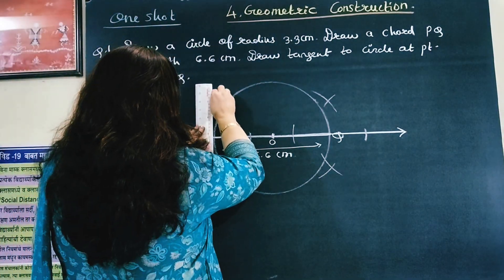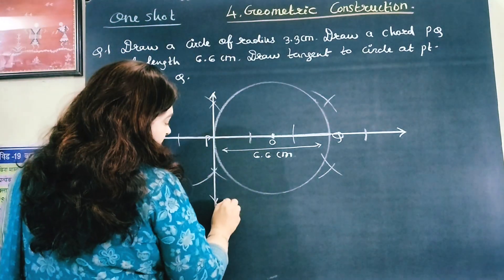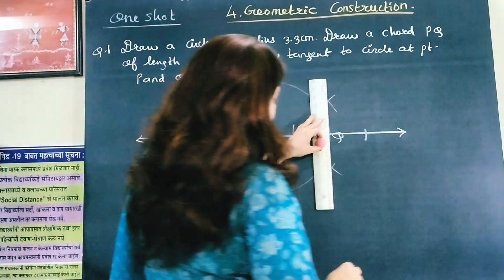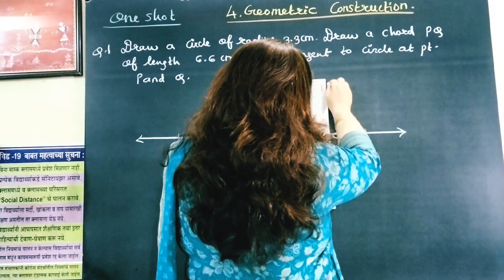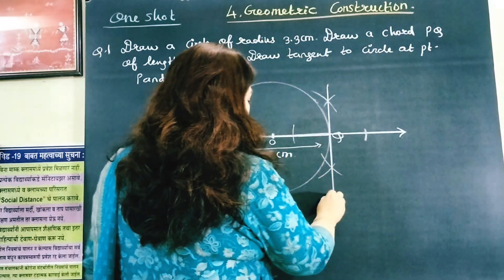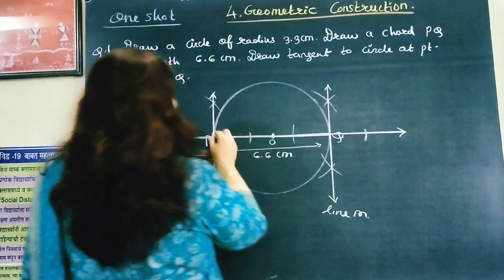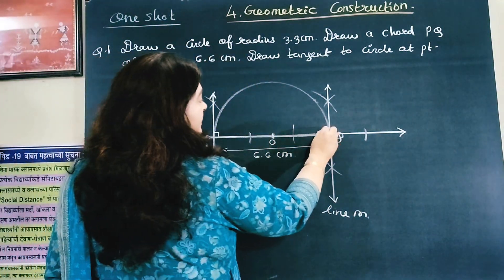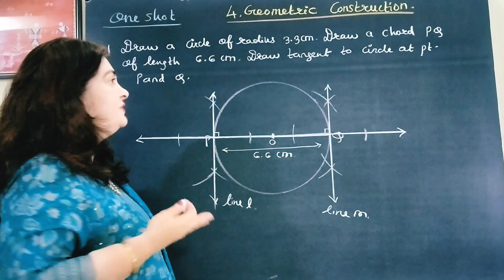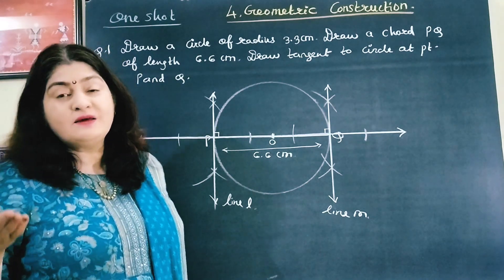This is one tangent at point P — let us call it line L. Here is another tangent at point Q — let us call it line M. As they are tangents, they are perpendicular to chord PQ. So we got two tangents at points P and Q: line L and line M.